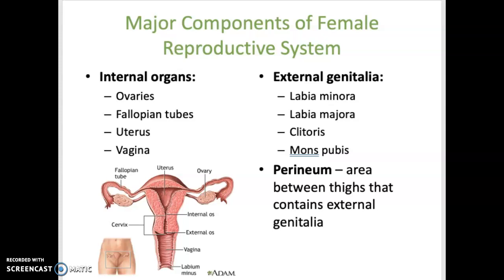The perineum is the area between the thighs that contains the external genitalia. Main functions of the female reproductive system include the production of ova, which are the female sex cells — basically the equivalent to sperm for males. Also to help nourish a developing embryo and fetus if fertilization occurs, and production of female sex hormones such as estrogen, which help regulate the reproductive cycle and promote development of secondary sex characteristics during puberty.